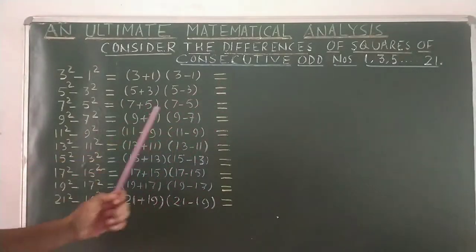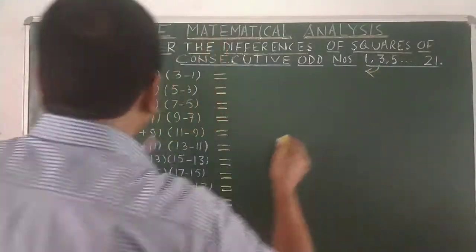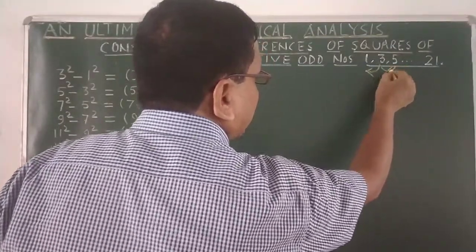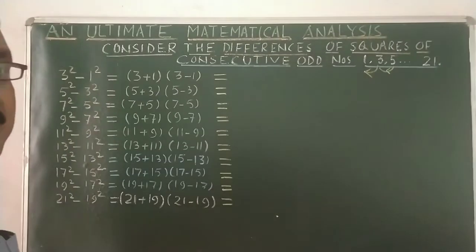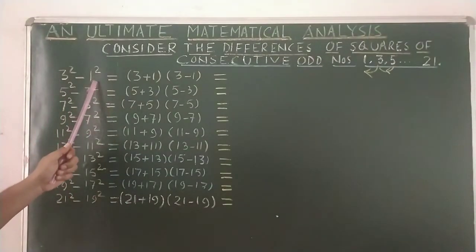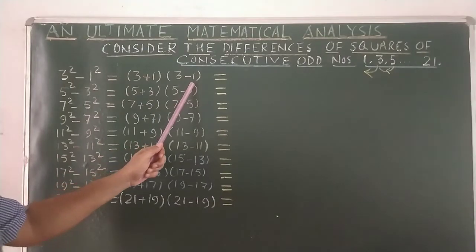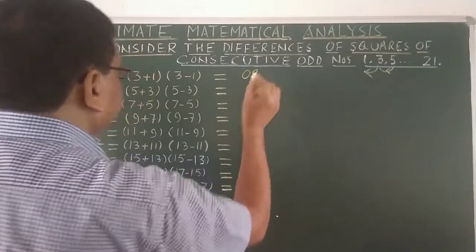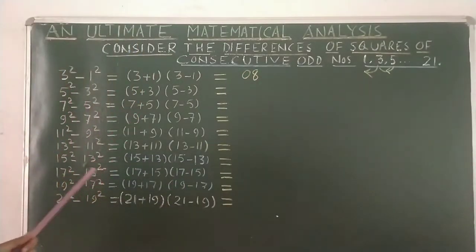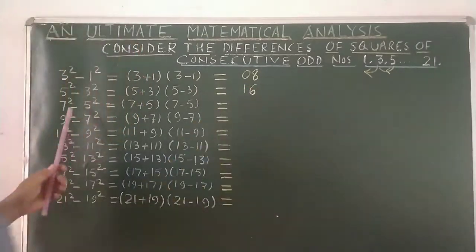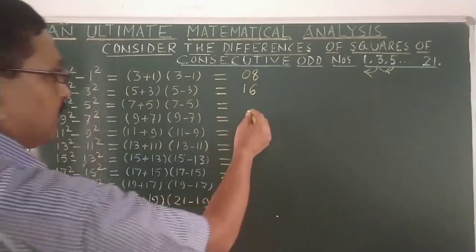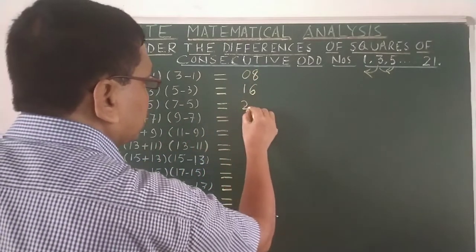Now see: 3 squared minus 1 squared. Using (a+b)(a-b): 3 plus 1, 3 minus 1 — you will get 8. Then 5 squared minus 3 squared: 5 plus 3, 5 minus 3 — it will be 16. Then 7 squared minus 5 squared: 7 plus 5, 7 minus 5 — it will be 24.